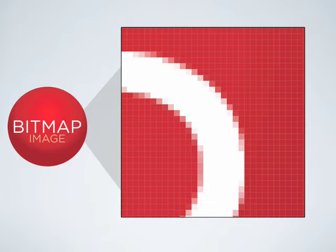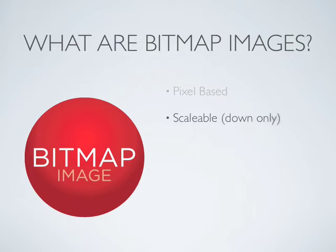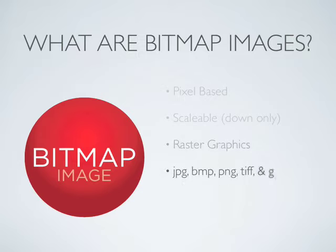So what are bitmap images? Bitmap images are pixel-based. Bitmap images can be scaled down, but not up. Bitmap images are also known as raster graphics. Common bitmap files include JPEG, BMP, PNG, TIFF, and GIF files.